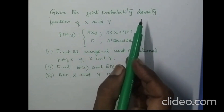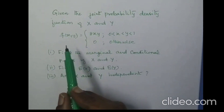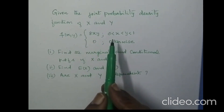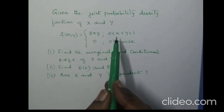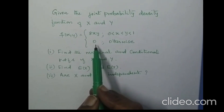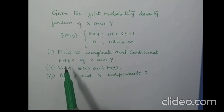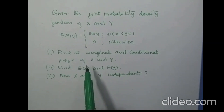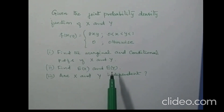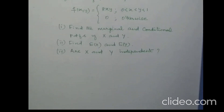Given the joint probability density function of x and y: f(x, y) = 8xy for 0 < x < y < 1, and 0 otherwise. Find the marginal and conditional probability density functions of x and y, find E(X) and E(Y), and determine whether x and y are independent.